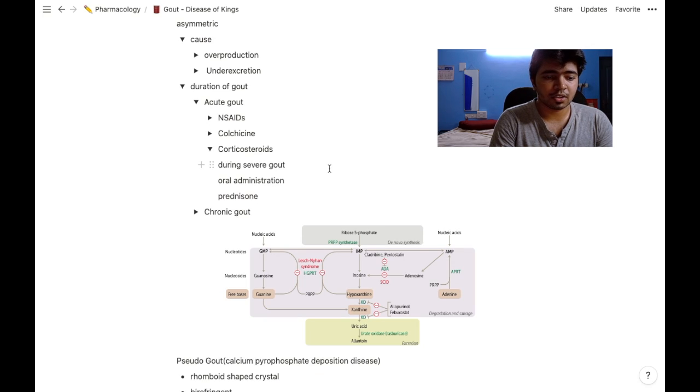Corticosteroids are given during severe acute gout and are orally administered. The corticosteroid mainly preferable is prednisone.